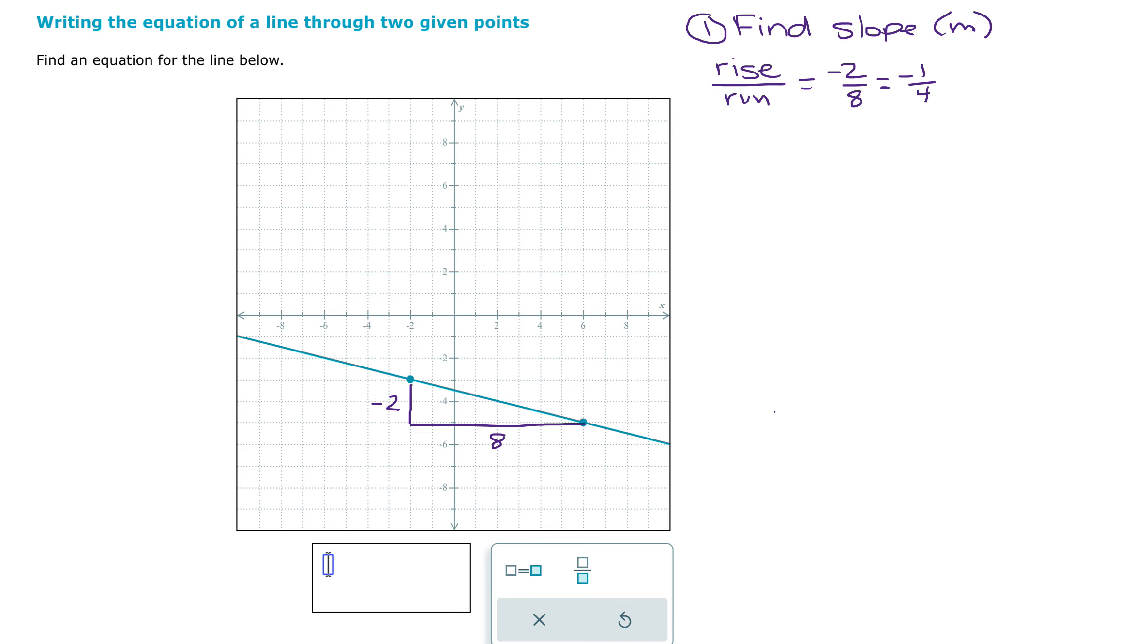The other way that you can find slope is using the slope formula. So I'll switch to a different color to show how to do it that way. The slope formula, remember, is y2 minus y1 over x2 minus x1.